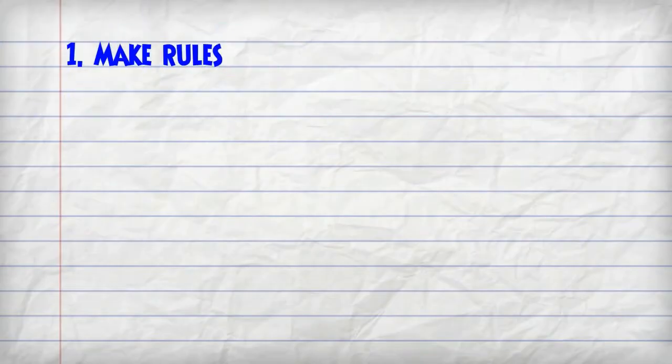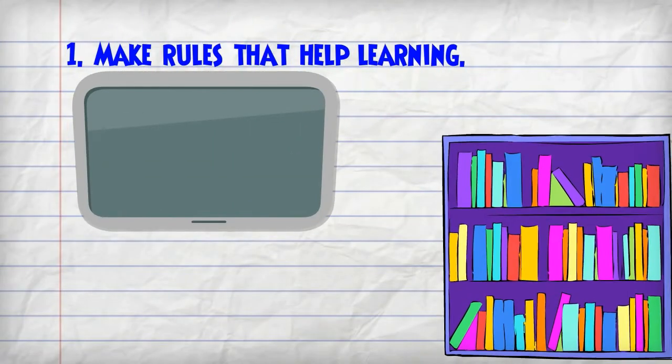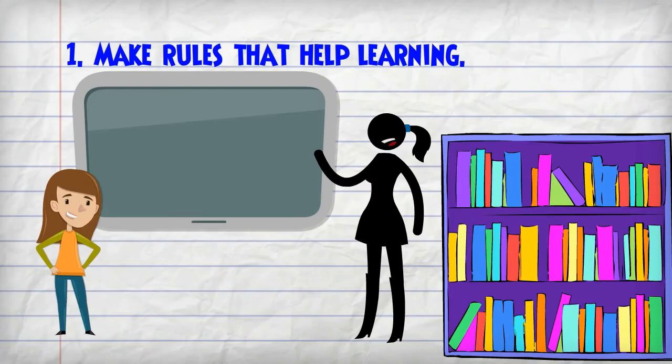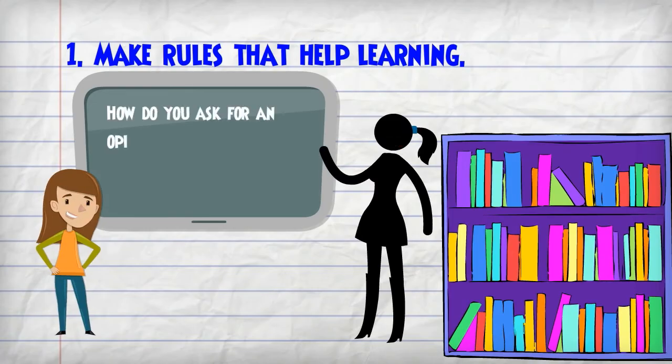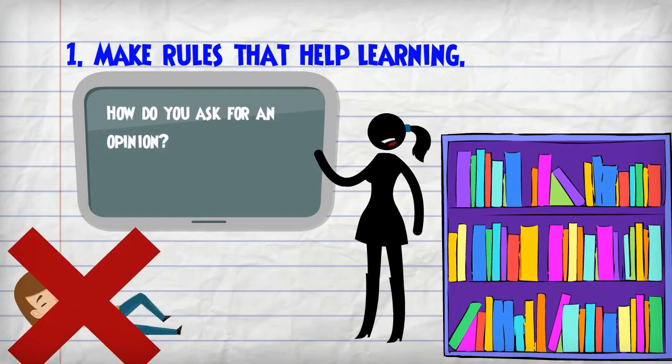The first rule is make rules that help learning. It is the educator's job to enable students to learn, so rules need to deter behavior that doesn't help learning, such as sleeping in class.